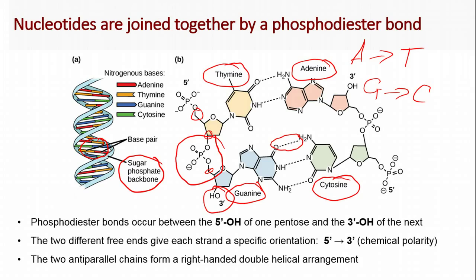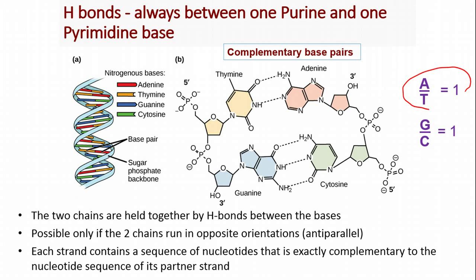These strands are anti-parallel — the strand on the left runs 5-prime to 3-prime downward, while the other strand runs 5-prime to 3-prime upward. The two strands of DNA that bind together to form our double helix always run in opposite directions, which is why we call them anti-parallel chains, forming a right-handed double helix. A always bonds to T, so the ratio of A to T is always 1, and G always bonds to C, so that ratio is always 1 as well.